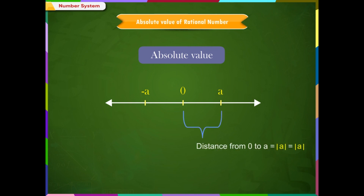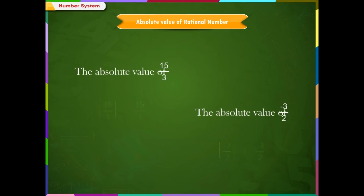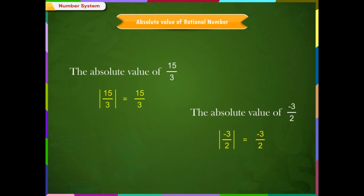The distance is positive, so the absolute value is always positive. The absolute value of a positive number is the positive number itself, and the absolute value of a negative number is its opposite. The absolute value of a number is denoted by vertical lines surrounding the number, as shown on the screen.